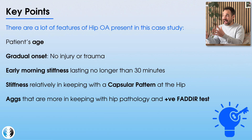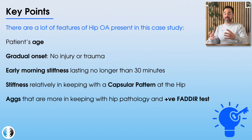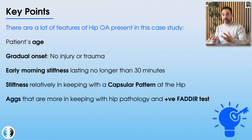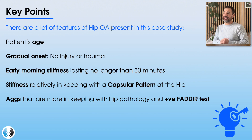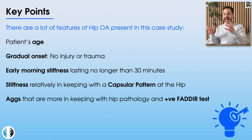Finally, the aggravating factors — getting in and out of a car, reaching down towards his feet, walking, and squatting — are all in keeping with a hip pathology, as is the positive FADIR test. There are plenty of signs here for hip osteoarthritis as part of this gentleman's condition.